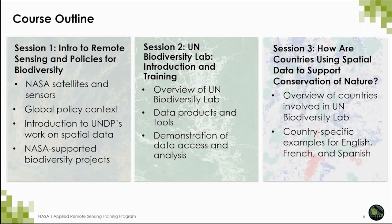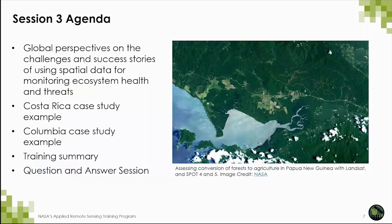Here's an overview of the course. Today, we will hear how specific countries are focusing on using the UN Biodiversity Lab and datasets they have available, and really using spatial data to support conservation efforts. We will begin with an overview of global perspectives on the challenges and success stories of using spatial data for monitoring ecosystem health and threats. We will hear from country representatives from Costa Rica and Colombia about their experiences using spatial data for conservation, and we will finish with a brief training summary and Q&A.